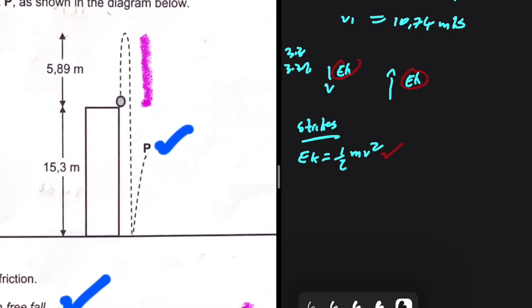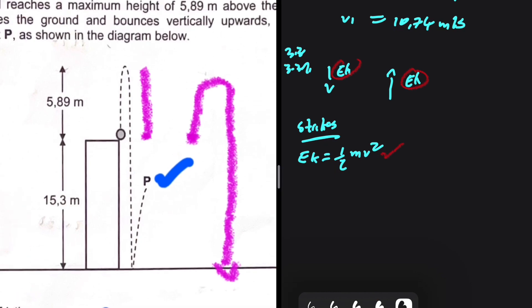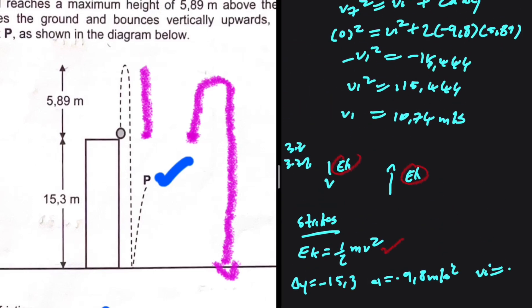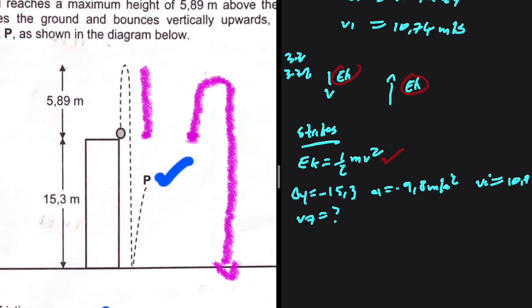Let's go back to our sketch. We are now considering the entire motion from the time it is projected until it strikes the ground. Delta Y for that motion is minus 15.3 — the displacement is downwards. Acceleration is minus 9.8 meters per second squared taking upwards as positive. VI from the previous calculation is 10.74 upwards, so that is positive. I want to find VF — the velocity as it strikes the ground. With these four variables, the equation VF² = VI² + 2A·ΔY will work.